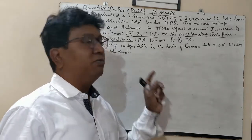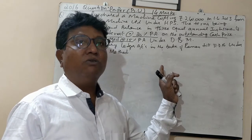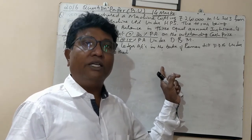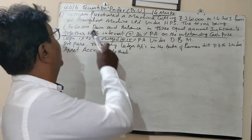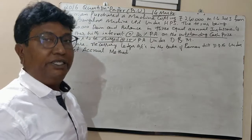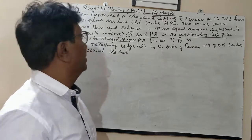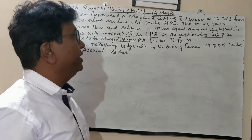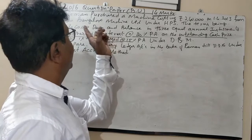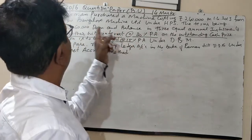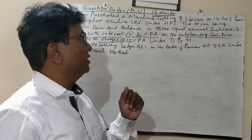I have given one small question here. With the help of that, let us see how to prepare ledger accounts along with interest calculation and depreciation. I have written a question on the board. Mr. Rahman purchased a machine costing ₹2,40,000 on 1/4/2013 from Bangalore Machine Limited. Mr. Rahman is the buyer and Bangalore Machine Limited is the seller. The total cost of the machine is ₹2,40,000.